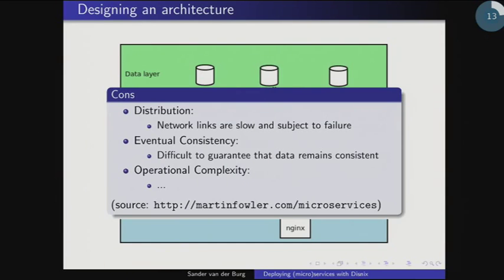There are also some cons. One is distribution — there's always a network link involved between components, which can be slow and subject to failure. Another is eventual consistency: with data divided across three separate databases that are related to each other, ensuring those relations remain consistent is quite difficult. But probably the biggest con is operational complexity.